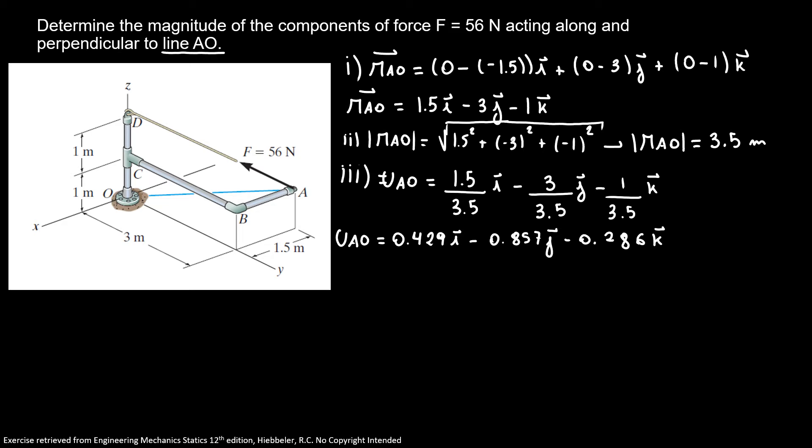Or if you prefer to use a ratio form, the unit vector AO is equal 3 over 7 I minus 6 over 7 J minus 2 over 7 K. You can decide which one you're going to use. We're going to use both of them to guide us to the right form.